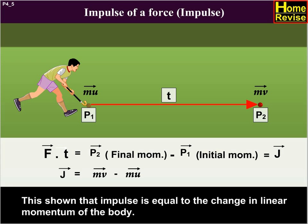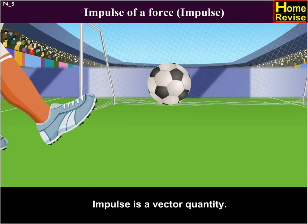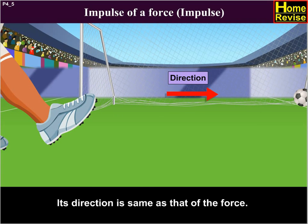This shows that impulse is equal to the change in linear momentum of the body. Impulse is a vector quantity. Its direction is same as that of the force.